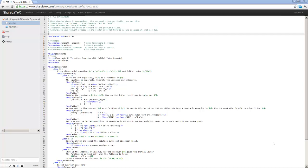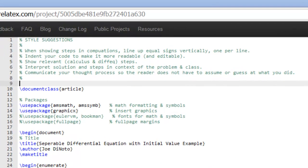There are a couple of style suggestions that I want to go over before we talk about the LaTeX-y stuff. Generally speaking, when you're showing your steps in computations, line up your equal signs vertically, one per line.